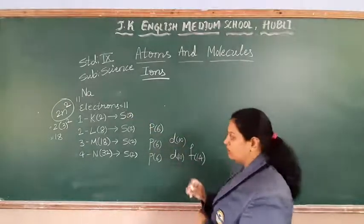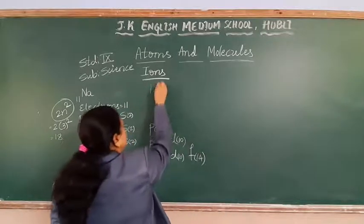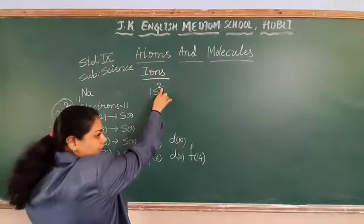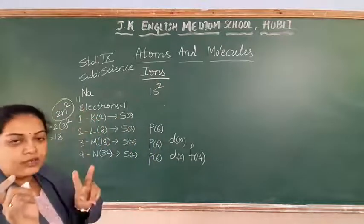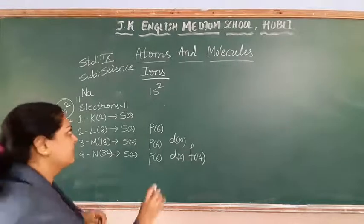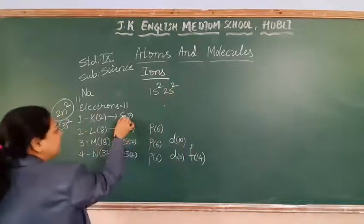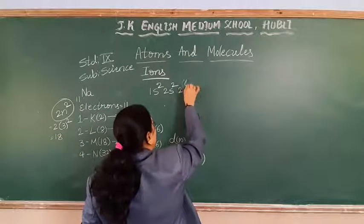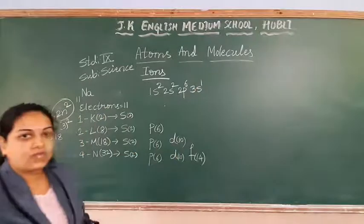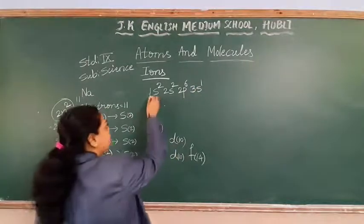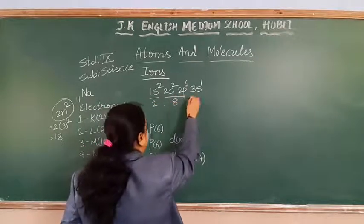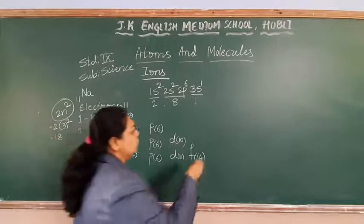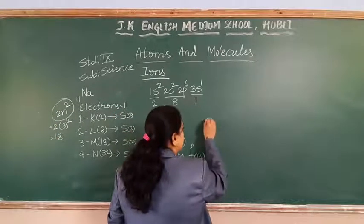Let me start with sodium, which has 11 electrons. First, the K shell with the S subshell accumulates 2 electrons. 11 minus 2 leaves 9 remaining. Next, the L shell fills: 2s gets 2, then 2p gets 6 — that's 8 more, using up 10 total. Then the M shell gets 1 electron remaining. So the electronic configuration is 2, 8, 1. Writing the sodium atomic structure: the nucleus, first shell with 2 electrons, second shell with 8 electrons, third shell with 1 electron.